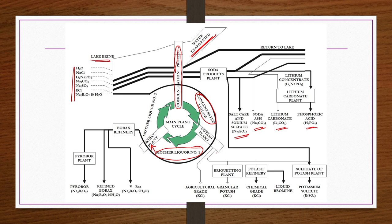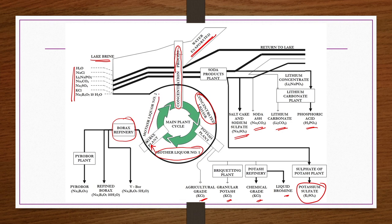After filtration in the potash plant, the solids are further processed to get agricultural grade potash, granular potash, chemical grade potash, or liquid bromine. By taking some fraction of soda products and some fraction of potash products and doing proper processing, potassium sulphate may also be obtained. The mother liquor of the potash plant is taken to the borax plant, where filtration yields solids taken to the borax refinery, and the filtrate is fed back in the cycle with the brine. The borax components may be individually fractionated into different types of borax products. This is the Trona procedure in a different pictorial presentation.